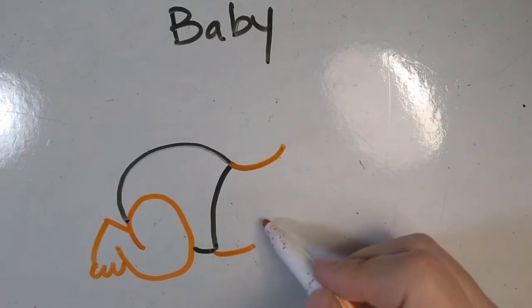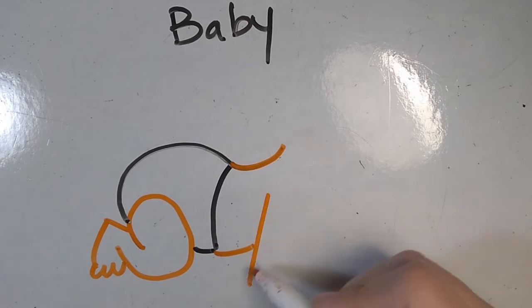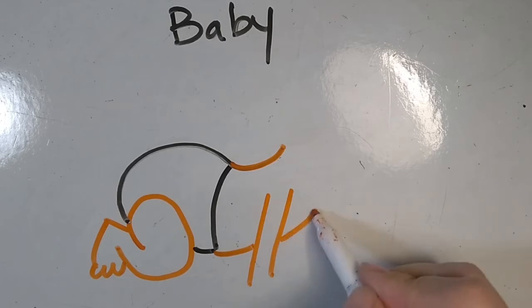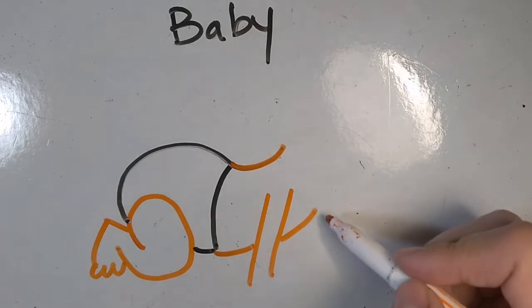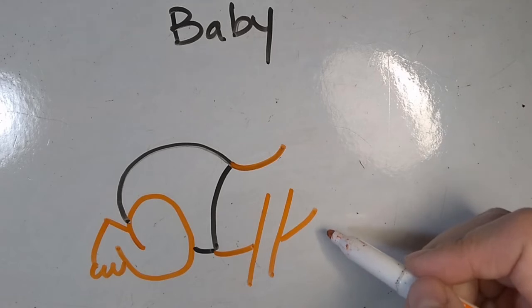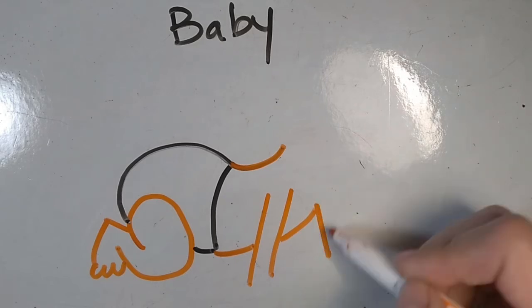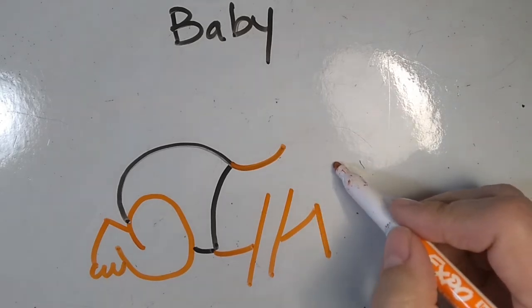We're going to start with the arm closest to us. So draw two straight lines. And then we're going to continue to draw the chest. So make sure that that curve that you're drawing follows the curve from the stomach of the baby. Next, we're going to draw the other arm that is further away from us. And again, two straight lines. The second line should be longer because that's going to touch the head of the baby.